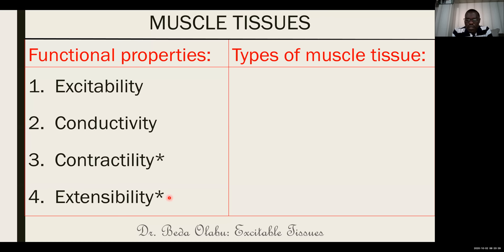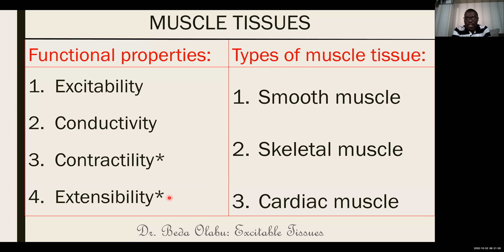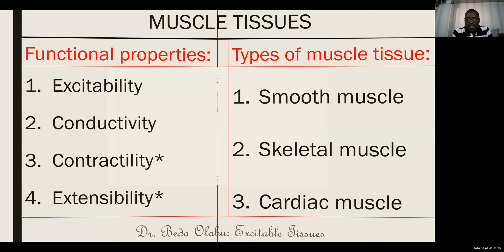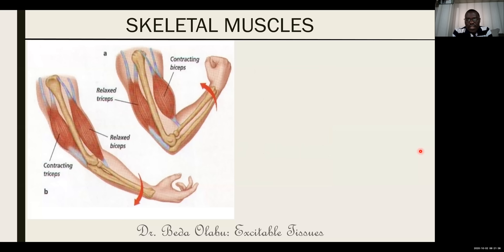There are three types of muscle. There is smooth muscle — the name does not refer to texture, and we'll see why they're called smooth. There is skeletal muscle and there is cardiac muscle. We are going to talk about these three types one by one, looking at the histology, distribution, functions, and physiological properties of each. Let's begin with skeletal muscles.